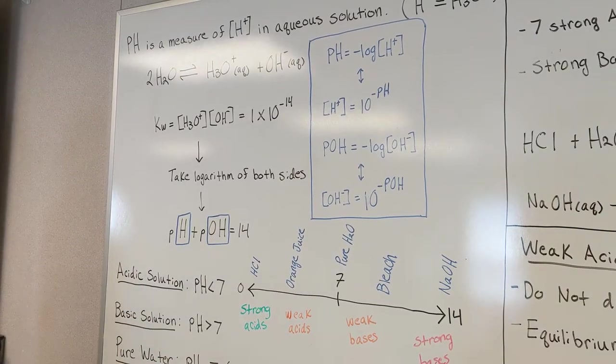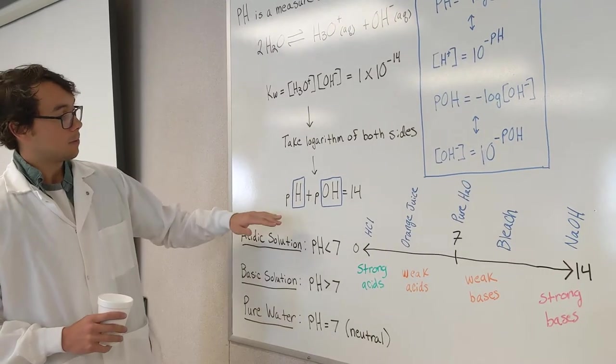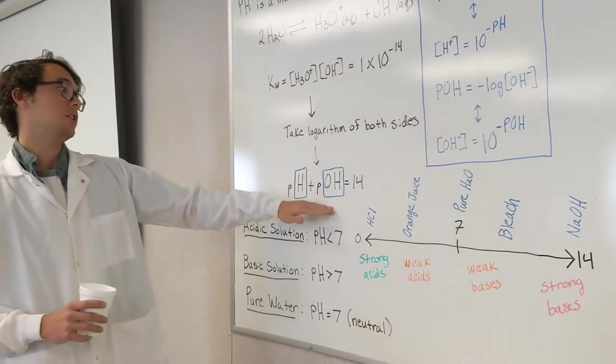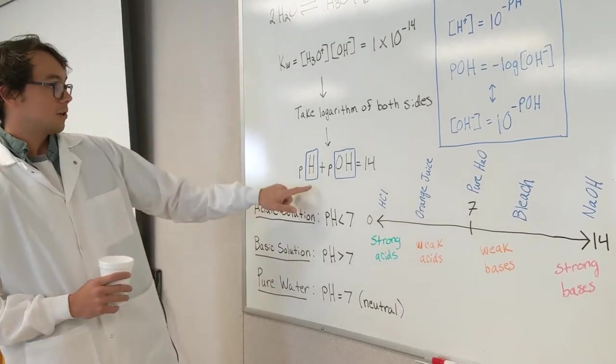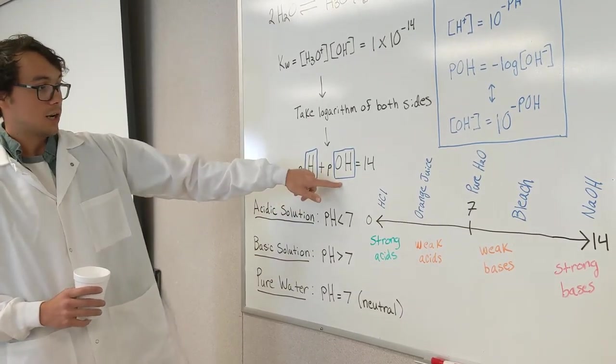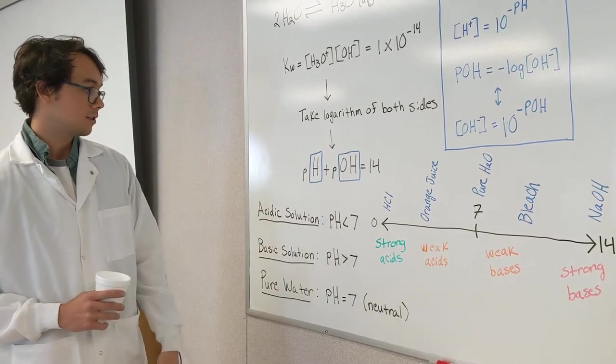All right, so basically, if you want to rearrange this, you can take the logarithm of both sides, you end up with pH plus pOH equals 14, which is a pretty nice, simple equation. We circled these here, H and OH, to kind of show you that they deal with our H plus concentration and our hydroxide concentration.